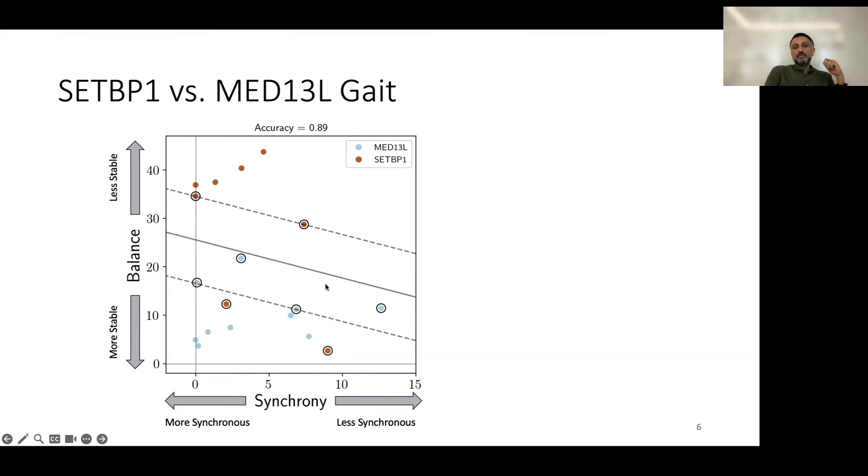And then what we were curious to look at were these participants who are closer to this line, meaning they are in this right region but close to this boundary, what we call the decision boundary, or the ones like these two that are on the wrong side of the boundary, for lack of a better word, meaning that in this case, we expected, or we observed that most of the SETBP1 participants are above this line, but there are these two participants that fall below. So we just wanted to look at these specific instances.